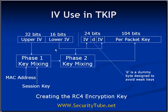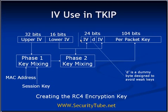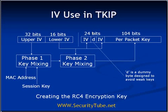The output of the phase 1 key mixing and the lower-order 2 bytes of the IV are given as input to the phase 2 key mixing. The output of phase 2 key mixing is finally used as a per-packet key, which is a 104-bit per-packet key. For generating the first 3 bytes of the concatenated key, the lower-order 2 bytes are used as 2 IV bytes, and the middle byte 'D' is a dummy byte designed to avoid weak keys — since in WEP, the middle byte was the important factor that made an IV weak or strong. In TKIP, this dummy byte is added in between the two IV bytes to avoid that weak IV concept.